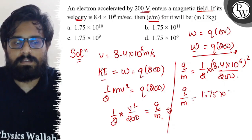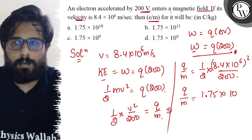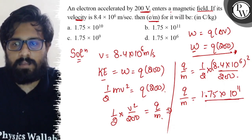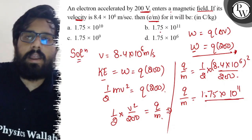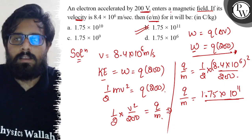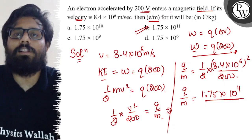So once you solve all this part, you will get a value of 1.75 × 10¹¹. And you will see this in your B option, so your B option is absolutely correct. So I hope you got the concept of this question. All the very best.